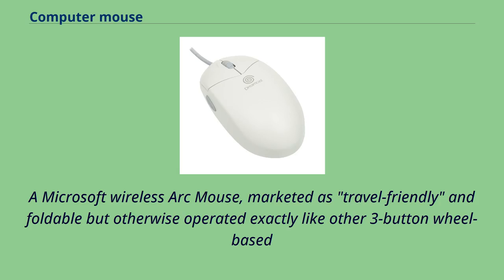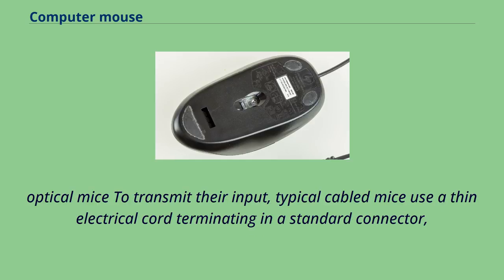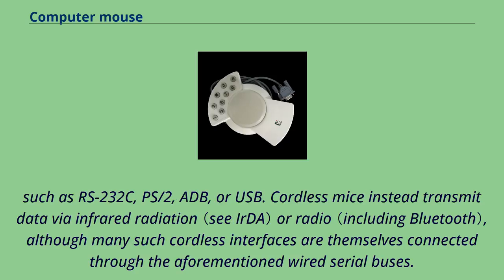A Microsoft Wireless Arc Mouse is marketed as travel-friendly and foldable but otherwise operated like other three-button wheel-based optical mice. To transmit input, typical cabled mice use a thin electrical cord terminating in a standard connector such as RS-232C, PS/2, ADB, or USB. Cordless mice transmit data via infrared radiation or radio, although many such cordless interfaces are themselves connected through wired serial buses.